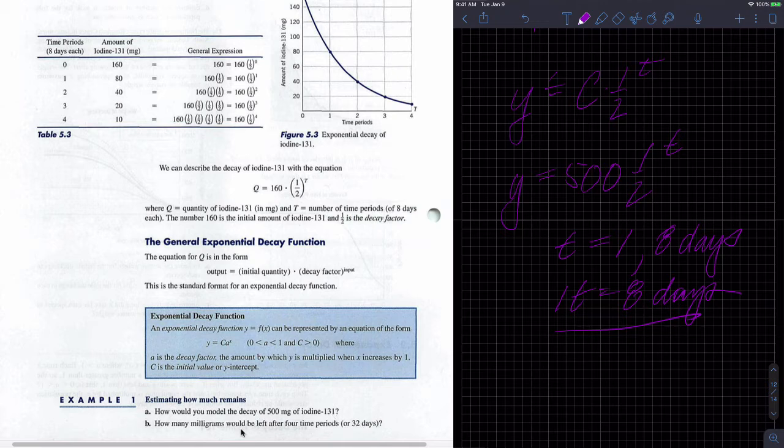And so how would you model it that way? And now, how many milligrams would be left after four time periods? This is example one. That's A. And B is how many milligrams would be left after four time periods or 32 days. So we would go Y equals 500 times one-half to the four because 32 divided by eight equals four time periods.